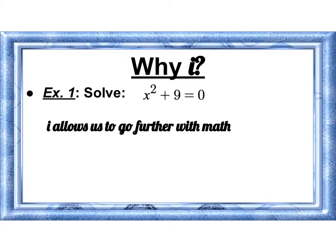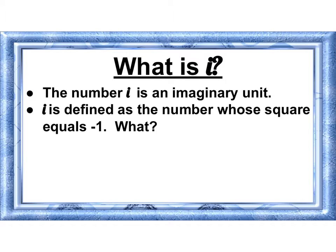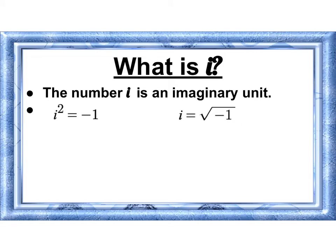So i allows us to go further with math. The number i is an imaginary unit. i is defined as the number whose square equals negative 1. i squared equals negative 1. It's the only time that we're going to square a number and get a negative number. If i squared is negative 1 and I take the square root of both sides, then i is the square root of negative 1.